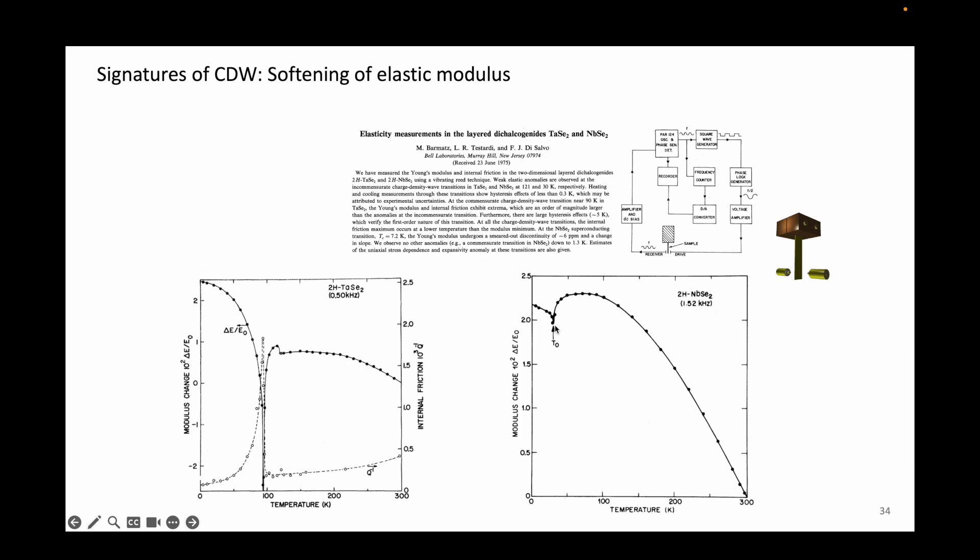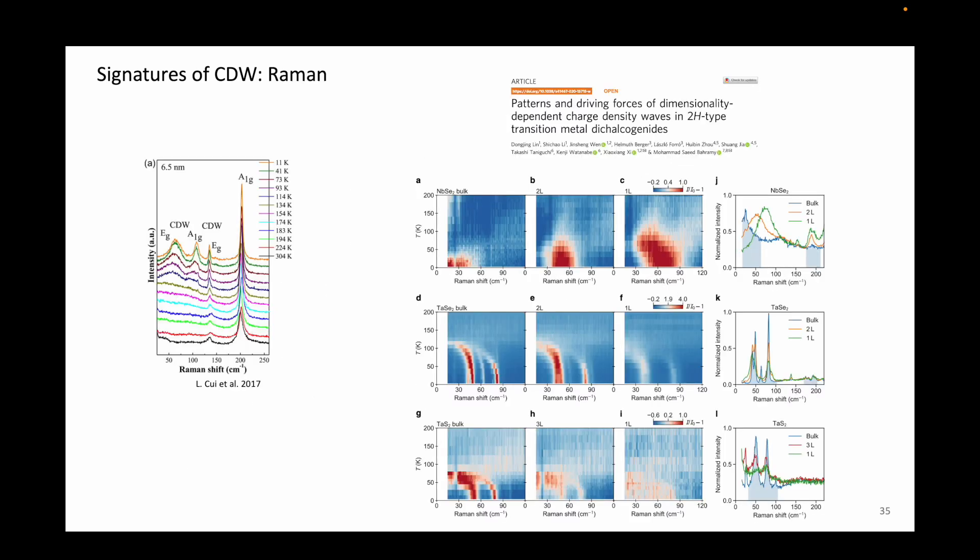Raman spectroscopy is a powerful tool to study the phonon modes in crystalline systems. Since charge density wave deals with lattice distortions, where some modes are destroyed and some are created as a result, Raman spectroscopy can be a great tool to detect the onset of the charge density wave state.